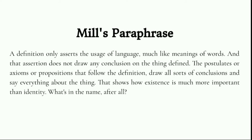When we assume that something is true, that it exists — the defined thing exists — that is a postulate, and that postulate gives all sorts of important things. For instance, if we didn't assume that a line exists, we would not be able to do any geometry. If someone asks us to draw a line and we don't know whether a line exists, there's no question of drawing one. The postulate following the definition enables us to do everything, while the definition only states the meaning of the terminology in use.